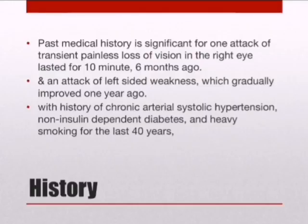Regarding the past medical history, it is significant for one episode of transient painless loss of vision in the right eye lasting 10 minutes, 6 months ago. This is significant, as right eye vision loss occurred mainly due to occlusion of the right ophthalmic artery, a branch of the right internal carotid artery — essentially a stroke to the eye. He also had an episode of left-sided weakness that gradually improved one year ago, representing another stroke affecting the right side of the brain.